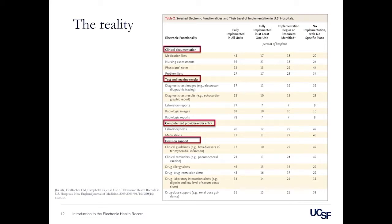The last two categories are computerized provider order entry, which replaces having to go to the nursing station and write orders, and decision support — where the computer has some understanding of what's going on with your patients and helps you make decisions. For example, if you're ordering antibiotics for pneumonia, it might suggest guideline-concordant recommendations. The key point is that very few hospitals are using health records that can do all of these functionalities comprehensively.